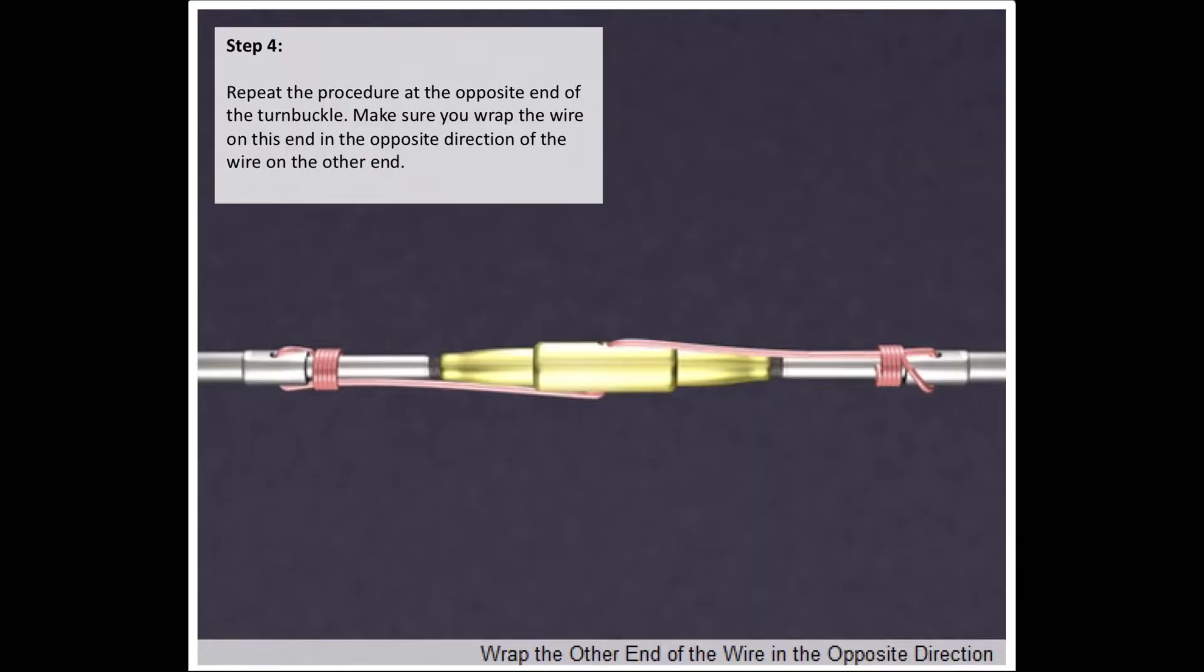And the final step: Repeat the procedure at the opposite end of the turnbuckle and make sure you wrap the wire on this end in the opposite direction that you wrapped the previous end.